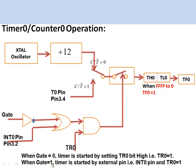When the GATE bit is 1, the timer is started by the external INT0 pin, and at the same time the TR0 bit must also be 1. In the block diagram, for the OR logic to be 1, the INT0 pin (P3.2) must be high. So when GATE equals 1, the timer or counter is started by the external application.